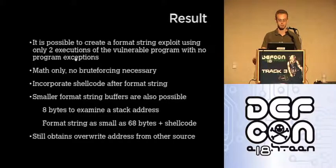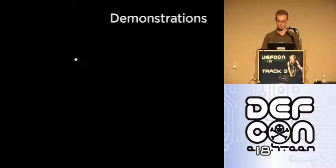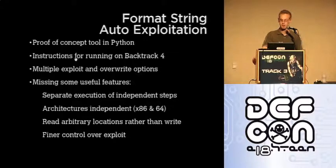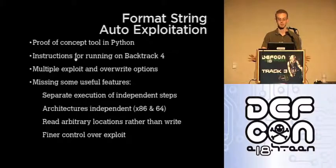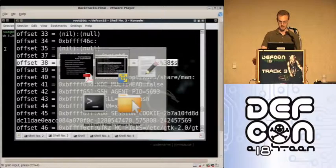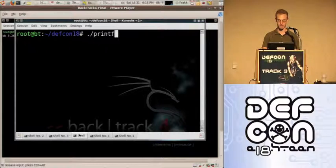It's also nice because the way this current technique works, you can shrink the length of the format string so that you can fit both the format string and the shellcode in less than 100 bytes, which is usually pretty reasonable for any user input field. However, if you don't brute force the override address or if you don't do some math, you still have to derive it from some other source such as a core dump or a known location like a program link table or detours. The first tool, which should be on your DEF CON CD, is a proof of concept tool in Python. I have instructions for running on Backtrack 4. It's a nice little suite for demonstrating the way the attack works, with multiple options about where you want to overwrite and where you want to put your shellcode.